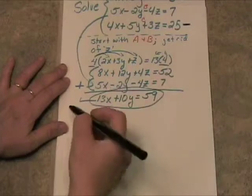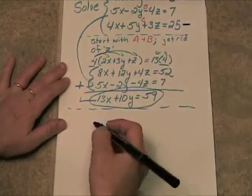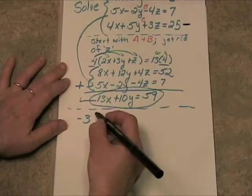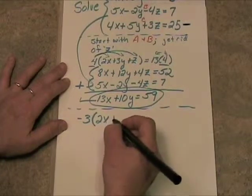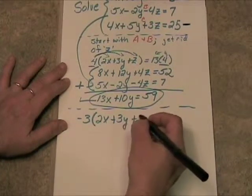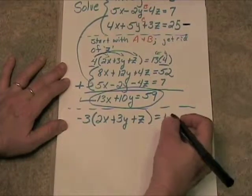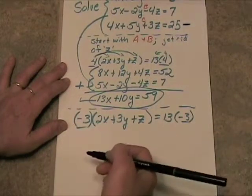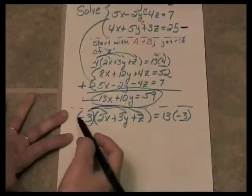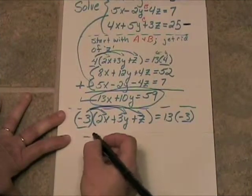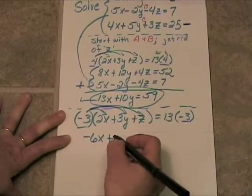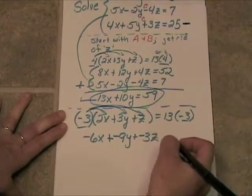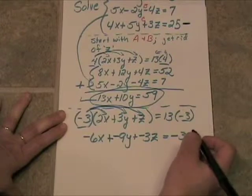We'll put a little dotted line here, and we will take equation A and we will multiply through by negative three. So it will be negative three times two x plus three y plus z is equal to thirteen times negative three. All right, so we're multiplying by negative three on both sides of that equation. Now distributing the negative three is going to give me negative six x plus negative nine y plus negative three z is equal to negative thirty nine.